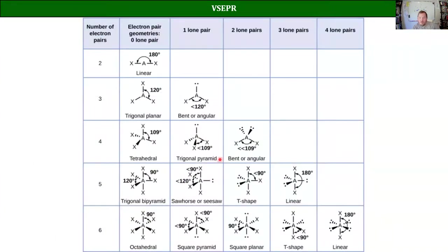There are a couple of key vocabulary words that will make memorizing the names much easier: 'trigonal' means triangular, 'pyramidal' means pyramid, and 'planar' means flat. With that in mind, a lot of these other names make sense — like 'square pyramid' versus 'square planar.' You can visualize what those are once you have this vocabulary down.